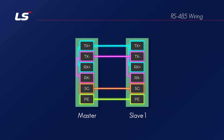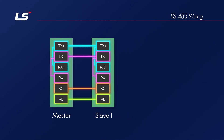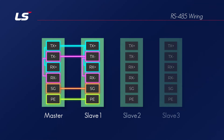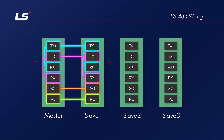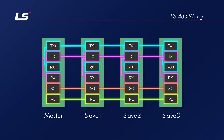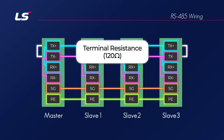The transmission and reception line between the CNET interface module and external device is connected, so you can send and receive data through half-duplex communication. RS-485 is also capable of one-to-N communication like RS-422. All slaves are connected by binding TX+ and RX+ together, with connections made between each slave's TRX+ and between TRX- respectively. You can install terminating resistors at both ends of the system, or select whether to activate them in XG5000.